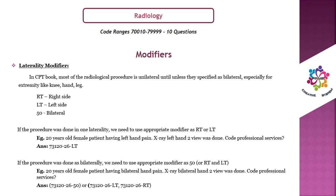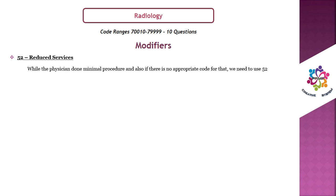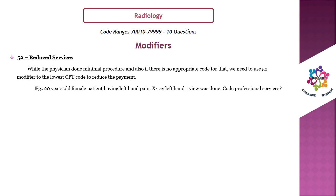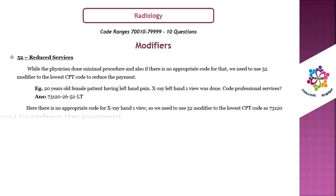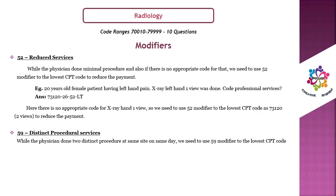We can also report bilateral as 73120-26-LT and 73120-26-RT on separate lines. Number 3: Modifier 52 for reduced services. When the physician performs a minimal procedure and there is no appropriate code, use modifier 52 on the lowest CPT code to reduce payment. Scenario: X-ray left hand 1 view, code professional services — answer is 73120 with modifiers 26, 52, and LT, because there is no code for X-ray hand 1 view.